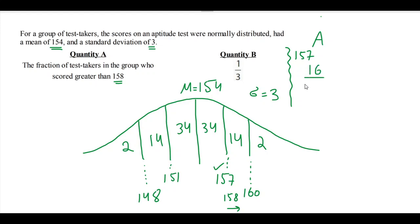So if this is quantity A over here, the fraction of the test takers in the group who scored greater than 148. Okay, so in total, if I'm just considering 157, it's basically 16 over 100, and I'm basically comparing it with 1 over 3. Okay, so if I can resolve it out, it's gonna be 4 over 25.